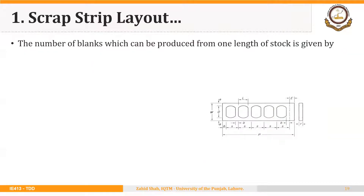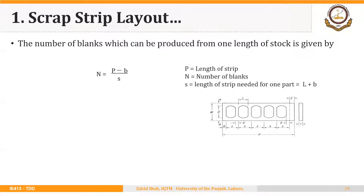The number of blanks which can be produced from one length of stock is found using the formula N = (P − B) / S, where P is the length of the starting strip and S is the length of strip needed for one part. S is equal to the length of the blank plus B, the distance between the blanks. We subtract this B because it is the starting B that was not used in the calculation, to get an accurate result.